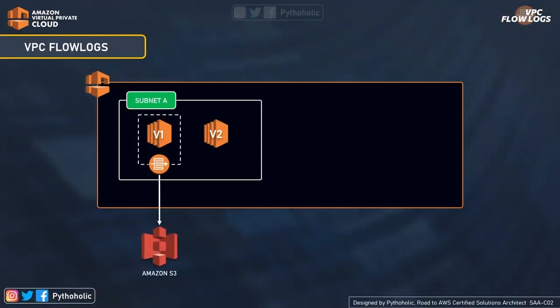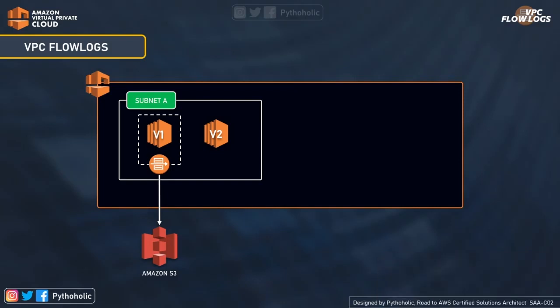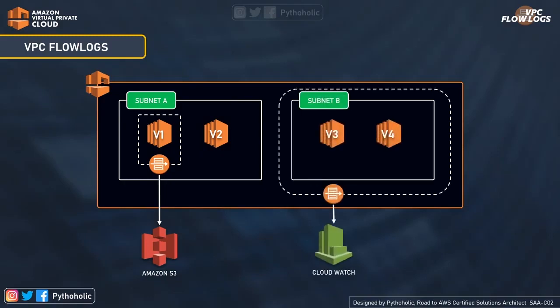You can create VPC flow logs for three entities: the VPC itself, a subnet, or a network interface. If you enable it for a subnet, all the instances and interfaces within that subnet will also be monitored. Any event that occurs in these entities will generate entries containing information about what exactly happened — that piece of information is called a log. The flow log data for a monitored network interface is regarded as flow log records.